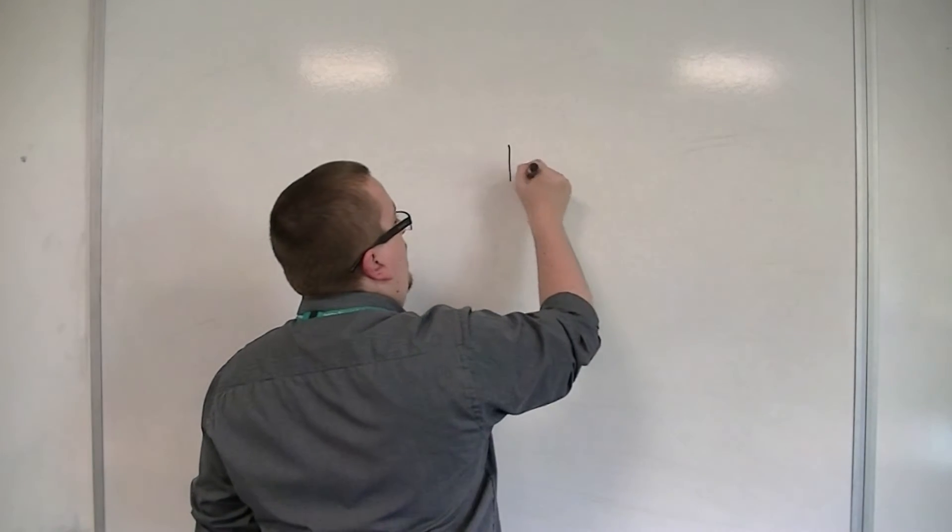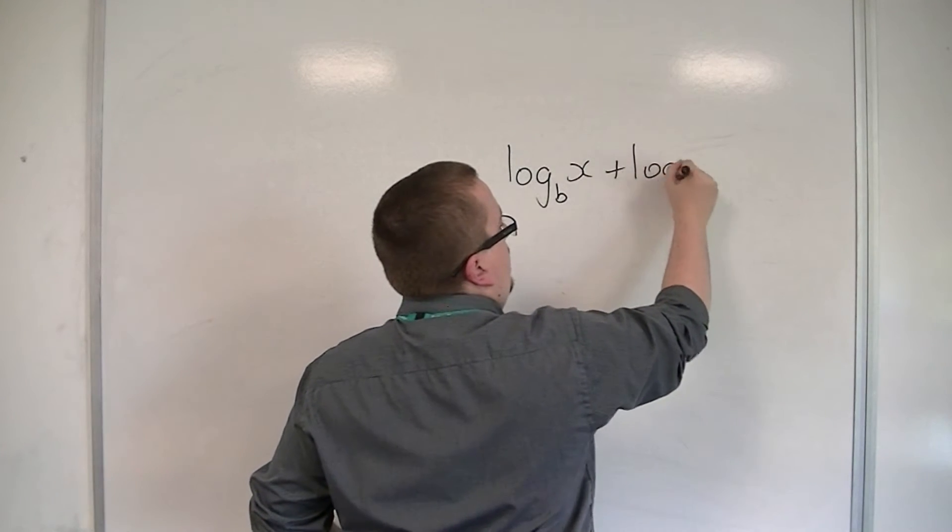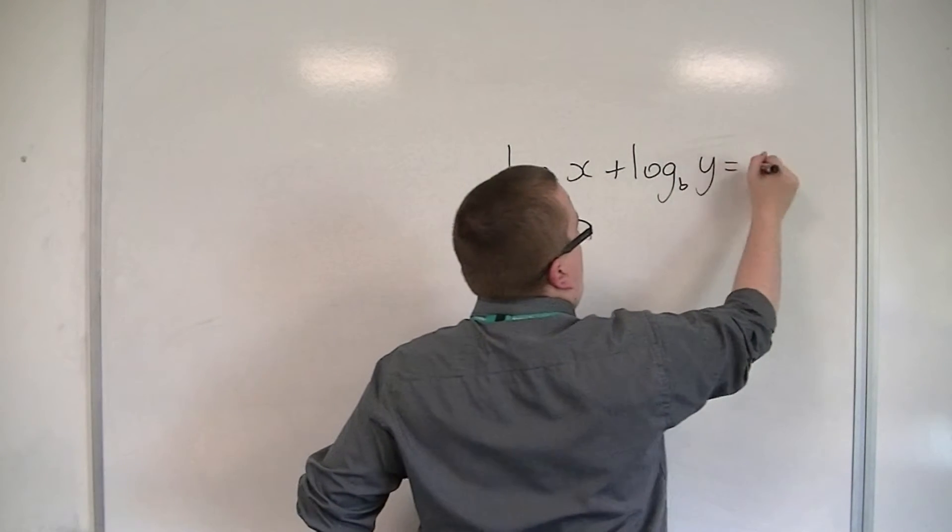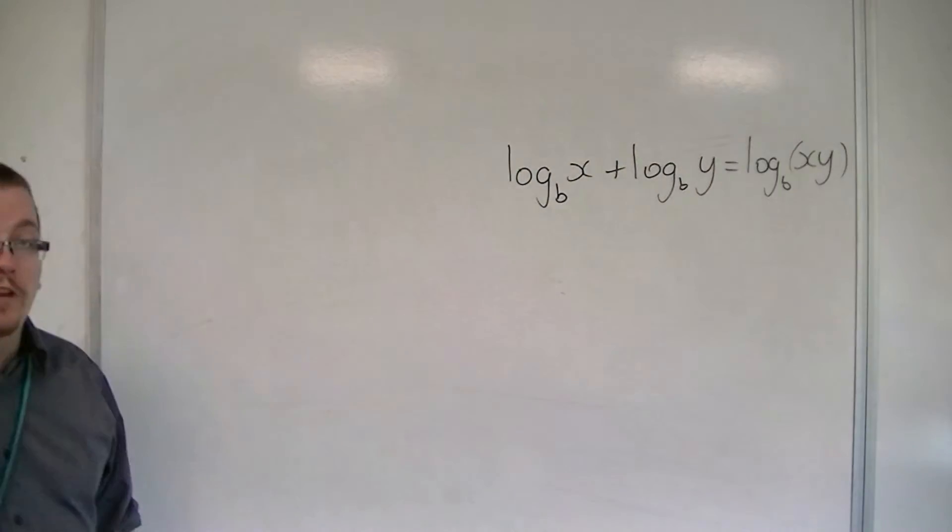So we have log with base b of x plus log base b of y is equal to log base b of x times y. Okay, so that's the first one.